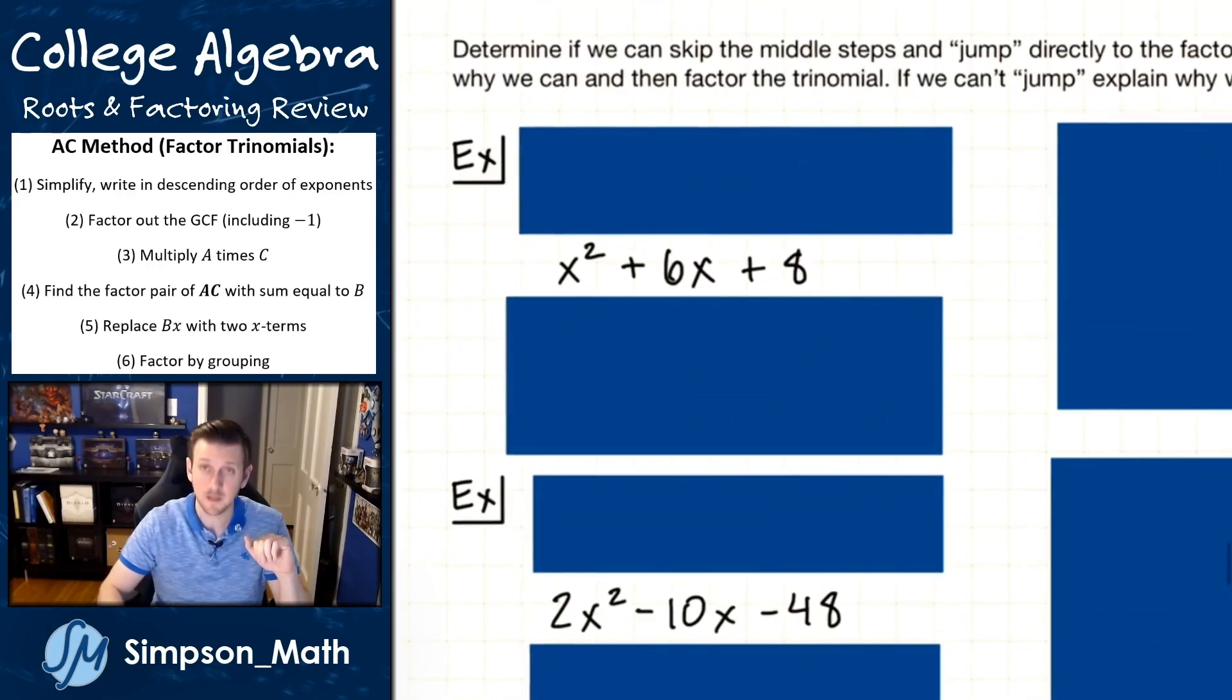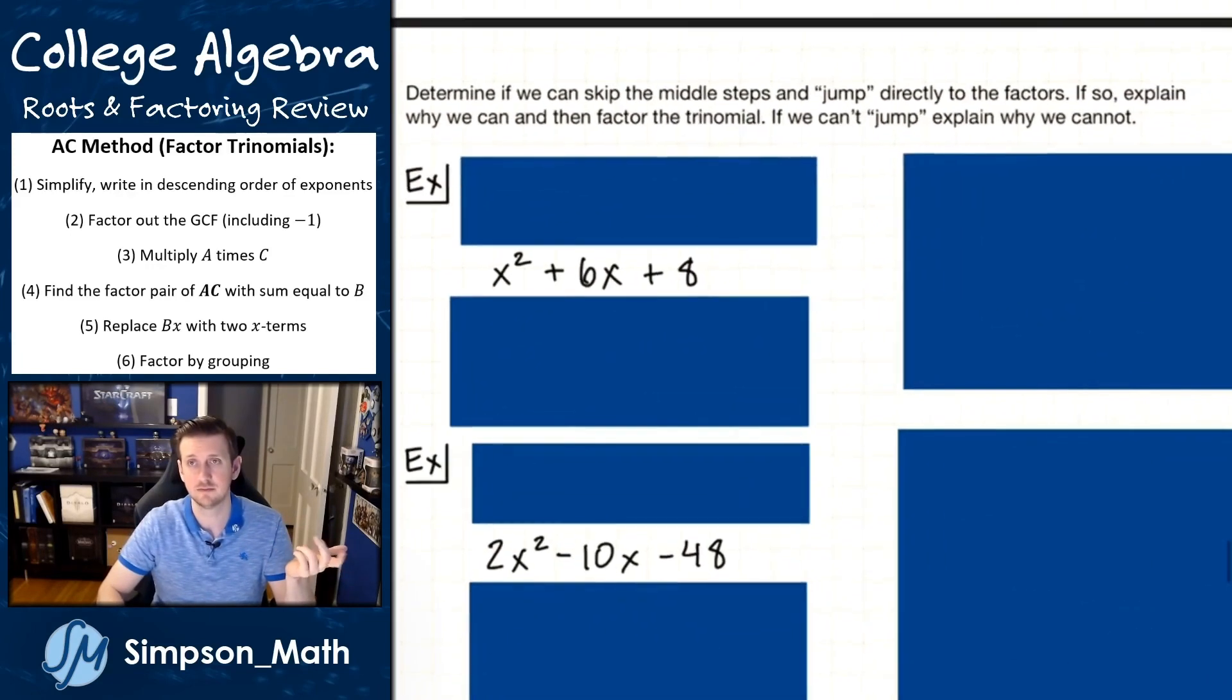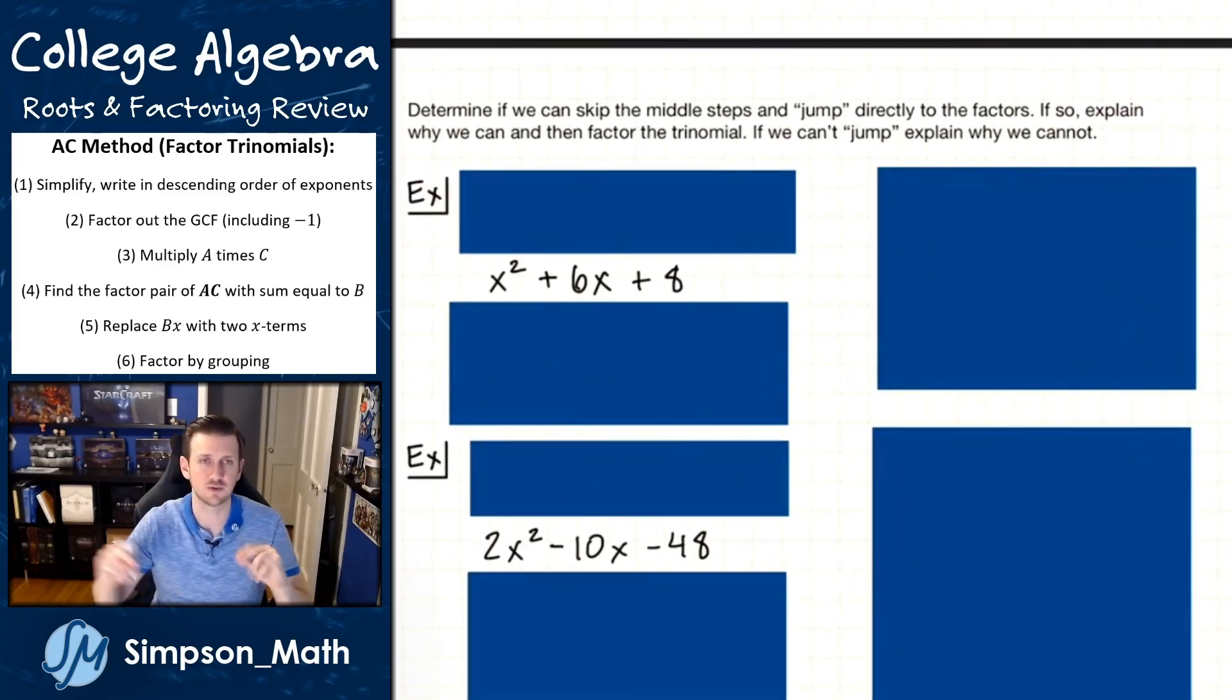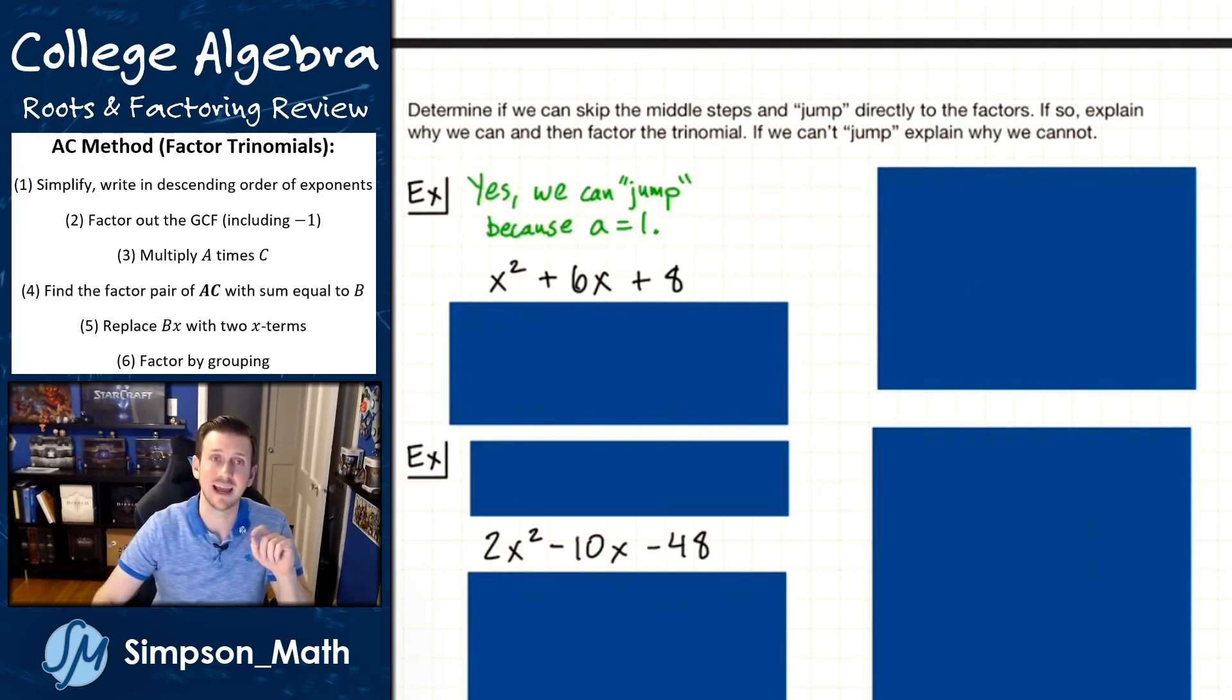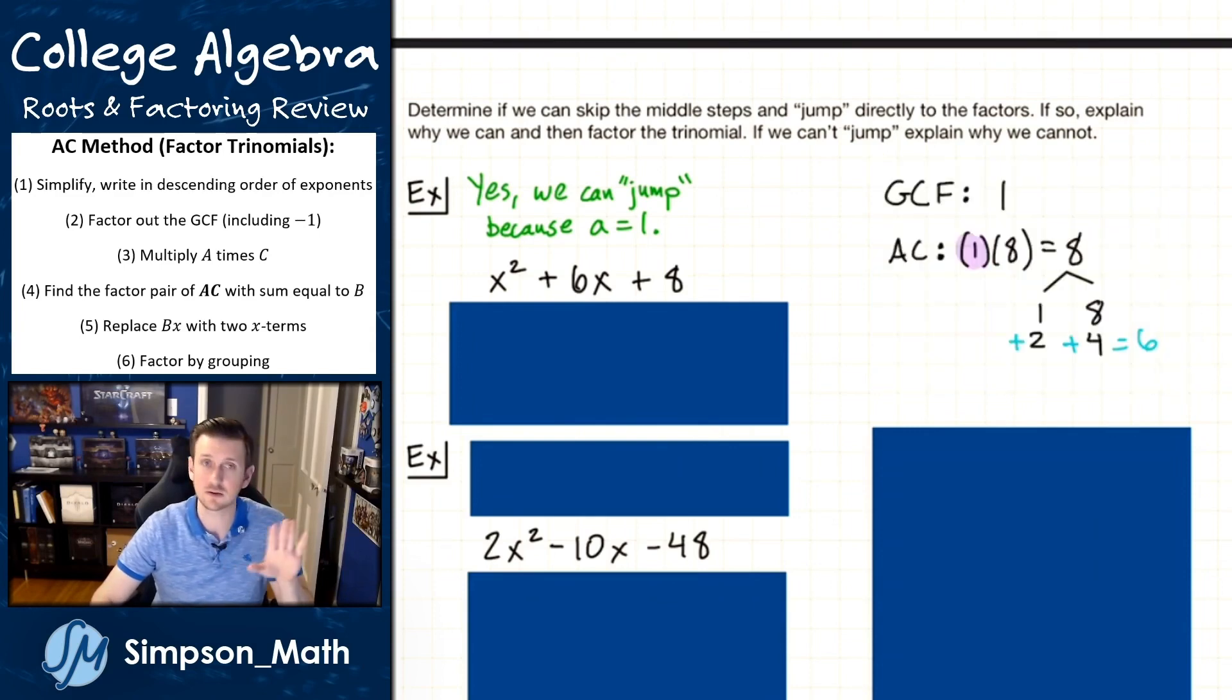So this first one, are we able to jump? Am I able to skip those steps and just go straight to my factors? Well, yes, I'm able to jump because A equals one. So how do we do that? So we still go through the GCF part, we'll make sure it's in order, do the GCF, and we still do our factor pairs.